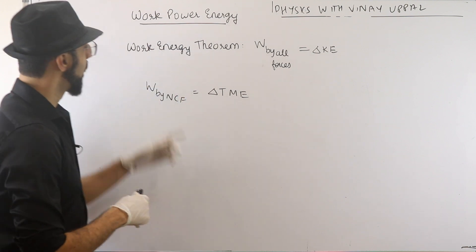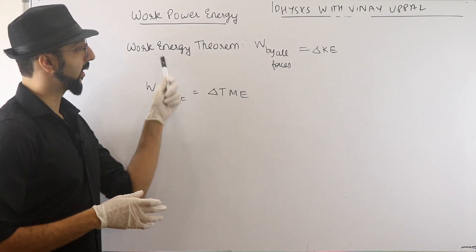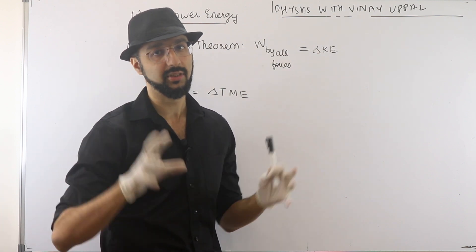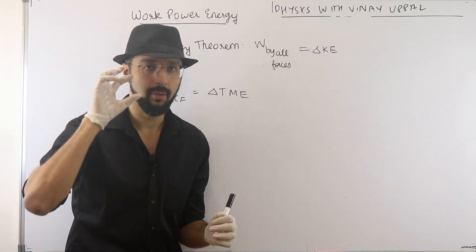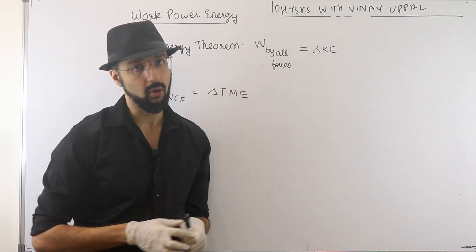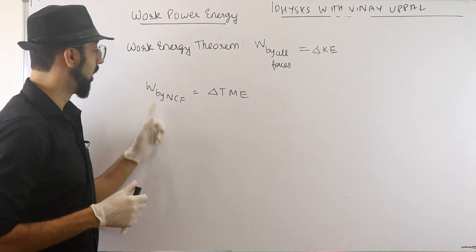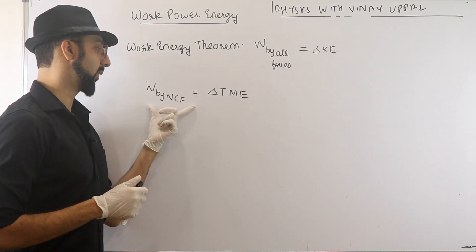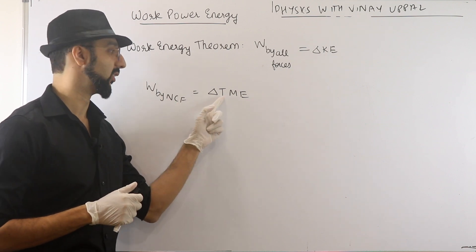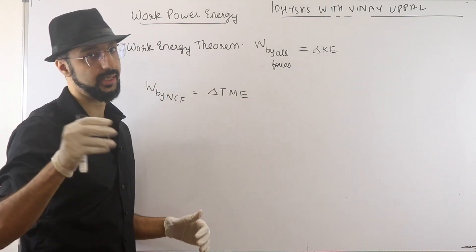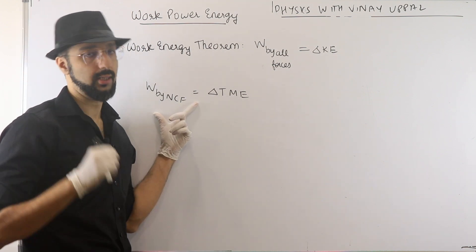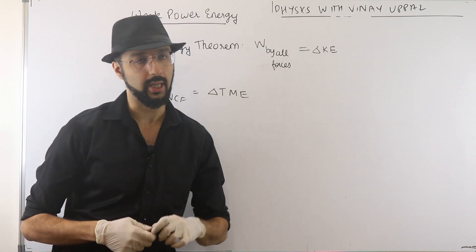So, work-energy theorem — just to quickly recap — it is work done by all the forces equal to change in kinetic energy of the system. Alternatively, we can write it as work done by non-conservative forces equal to change in the total mechanical energy (TME). When the work done by non-conservative forces is zero, total mechanical energy is conserved.